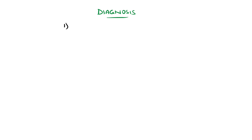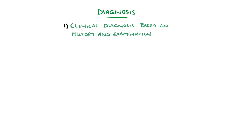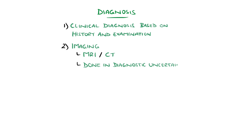Sciatica is a clinical diagnosis, meaning it is usually made based on the history and physical exam. If any neurological deficits persist over six weeks, it should be further evaluated through imaging like MRI or CT. This is also the case if there is diagnostic uncertainty.